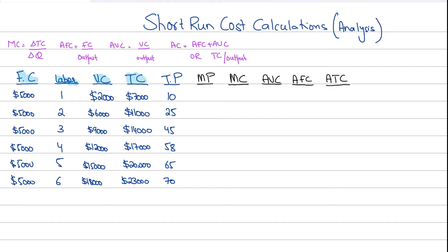Total cost is basically the sum of fixed cost and variable cost. The total product tells us the total output produced — if we have hired one worker, the total output in terms of pizzas is 10 pizzas; if we hire two workers, the total output is 25 pizzas, and so on.